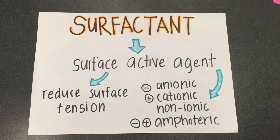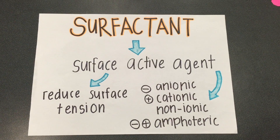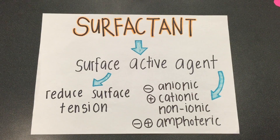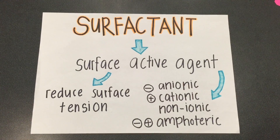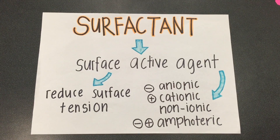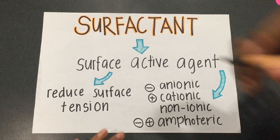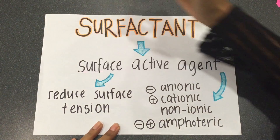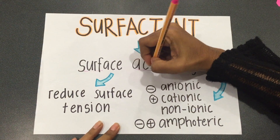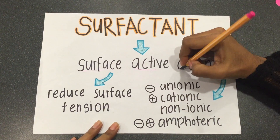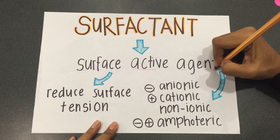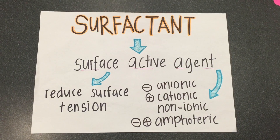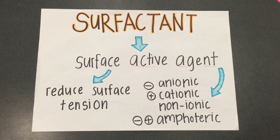What is surfactant? Surfactant is briefly known as surface active agent. The word surfactant comes from surface, active, and agent. Surfactant is used to reduce surface tension.